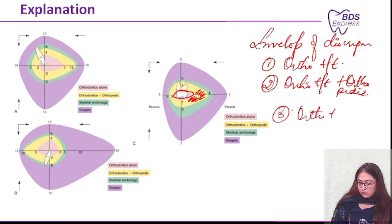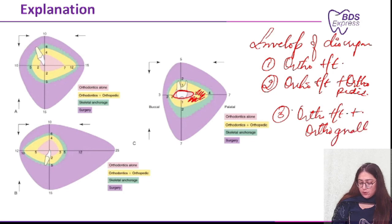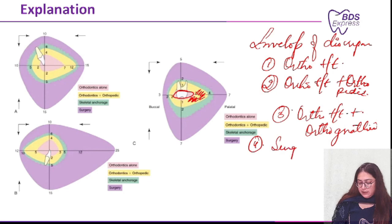The third circle says changes are achievable through ortho treatment plus orthopedic treatment plus orthognathic surgery. And the fourth, outermost circle represents surgery alone.